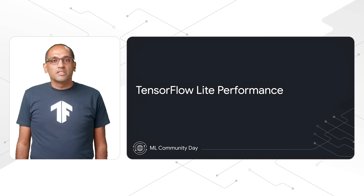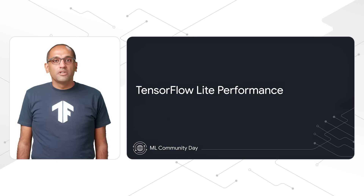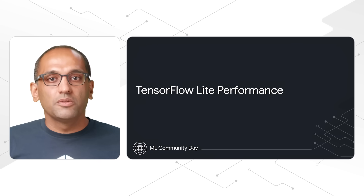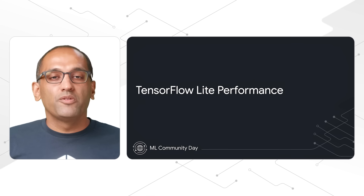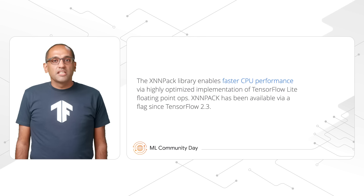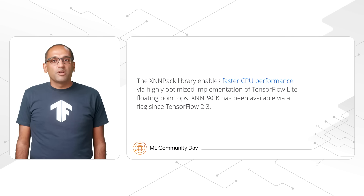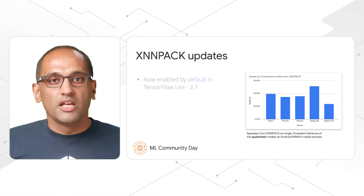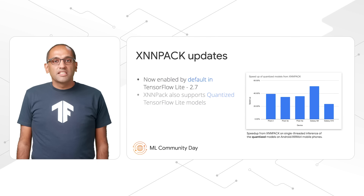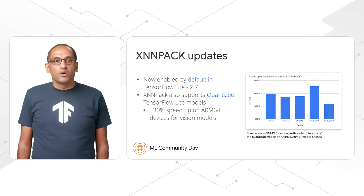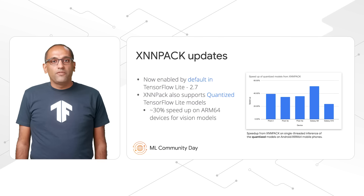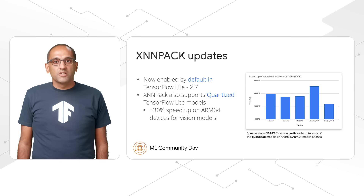Machine learning models running on device need to be highly performant to deliver a great user experience. We continue to offer the best out-of-the-box performance on CPUs, as well as peak performance using on-device accelerators. XNNPack is a highly optimized library that enables faster CPU performance of TensorFlow Lite models via highly optimized implementations of floating-point ops for ARM, WebAssembly, and x86 platforms. XNNPack is now turned on by default starting with TensorFlow version 2.7. XNNPack also supports quantized TensorFlow Lite models, resulting in approximately 30% speed-up on ARM64 mobile devices and a 5x speed-up on x86 laptop and desktop systems for certain image models.